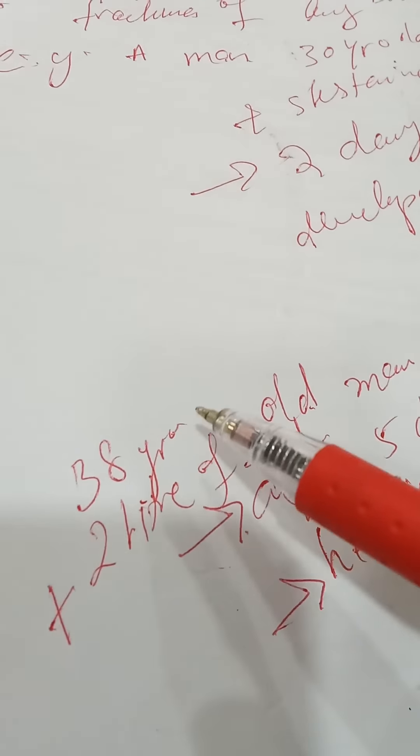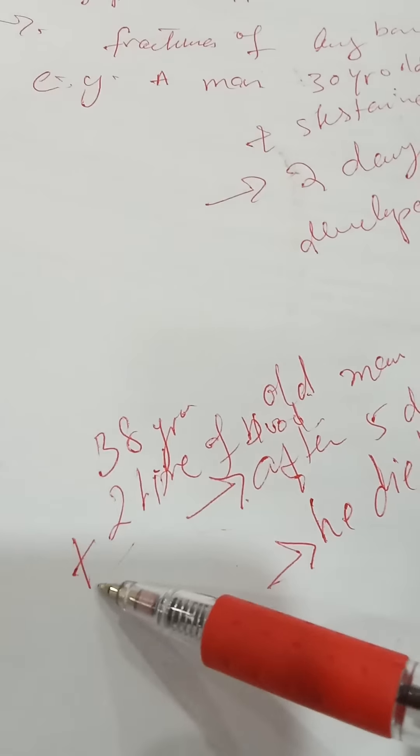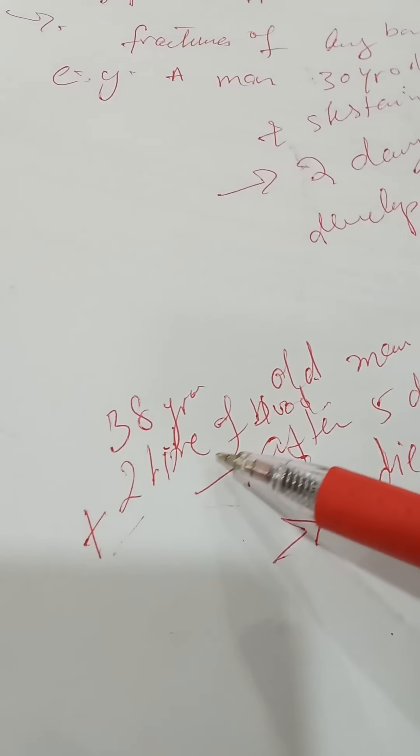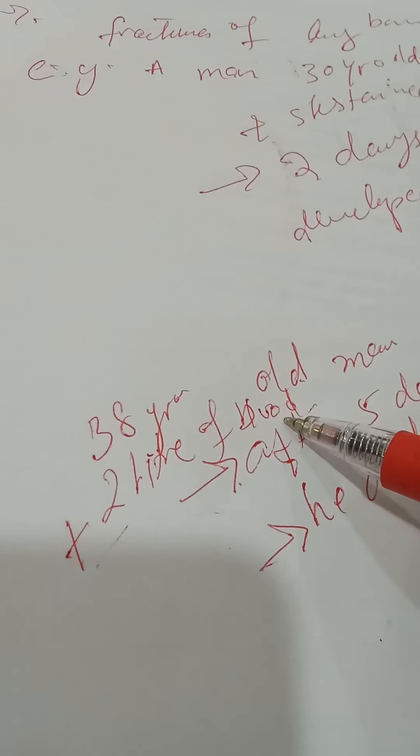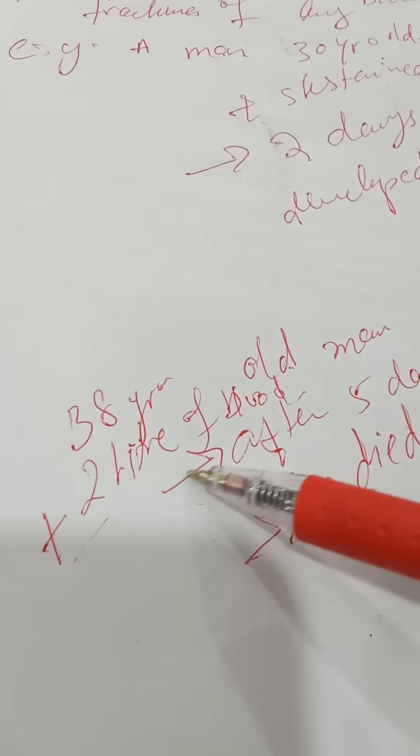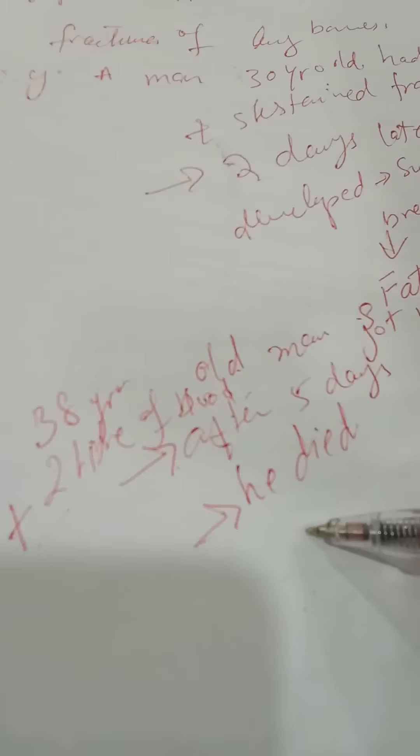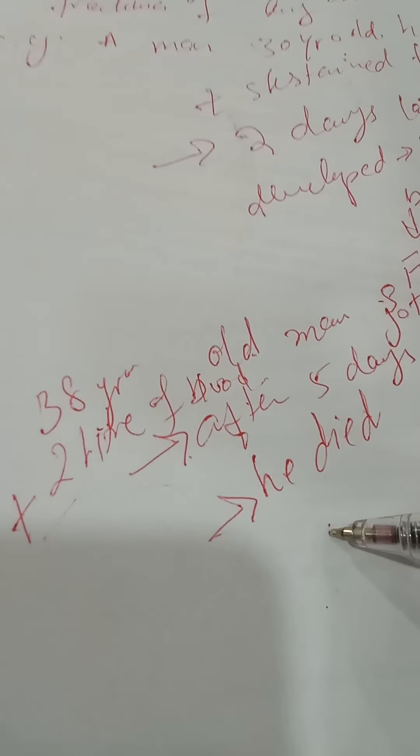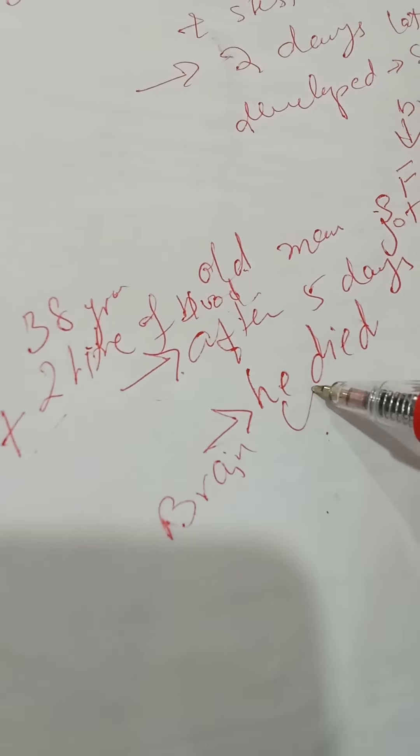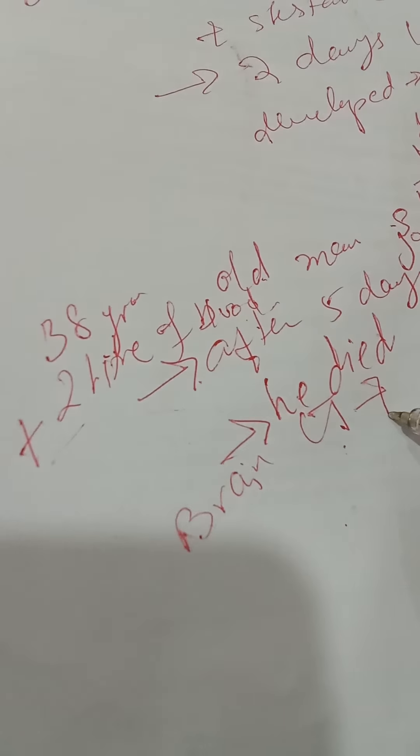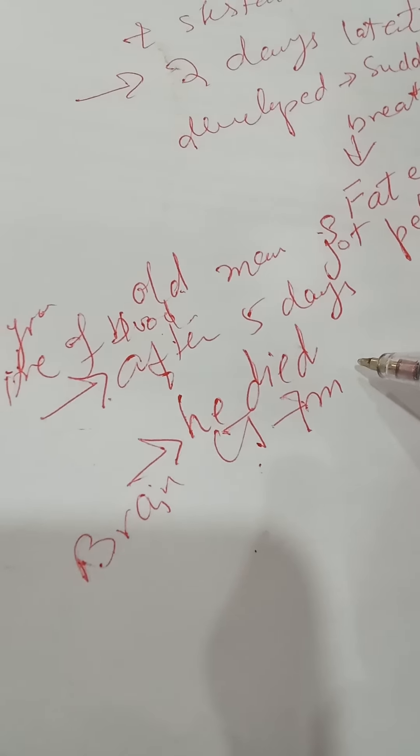38 year old man got pelvic fracture and 2 liter of blood loss. During accident, he loses 2 liter of blood. Then after five days, he died. And his brain CT shows multiple areas of infarction.